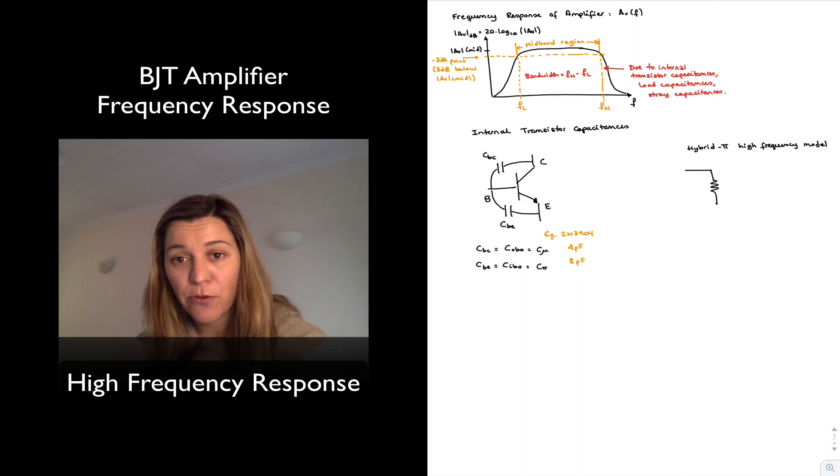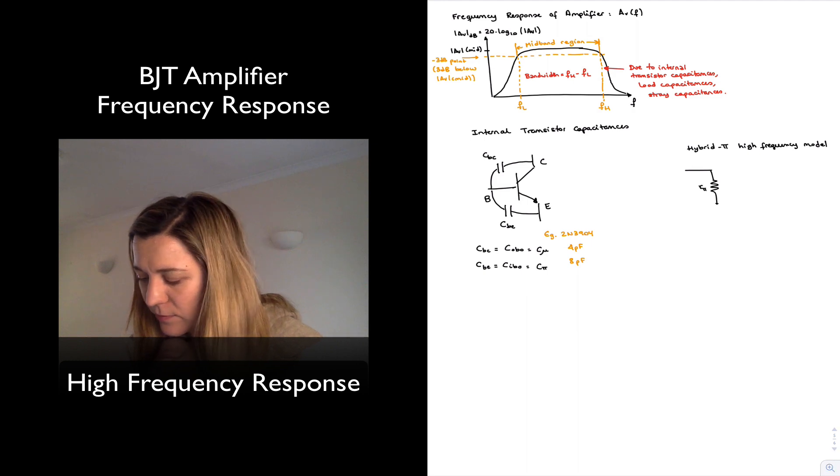A resistor from base to emitter, r pi. And then from collector to emitter, we have a current source, which is Gm v pi, or beta ib.